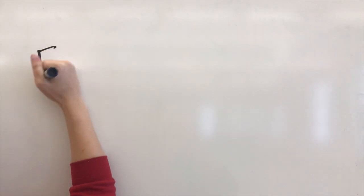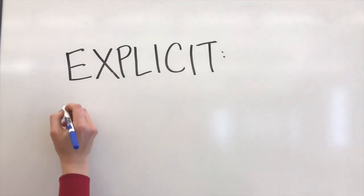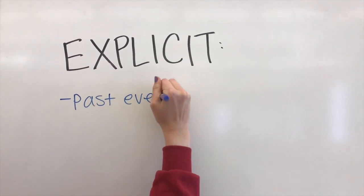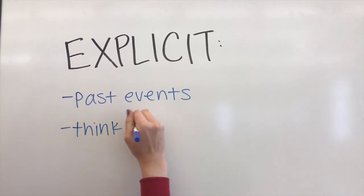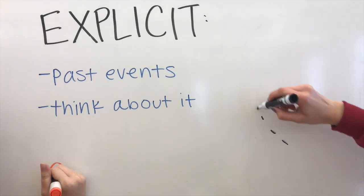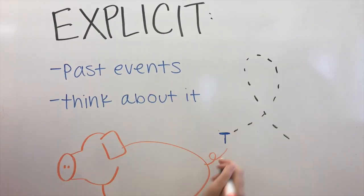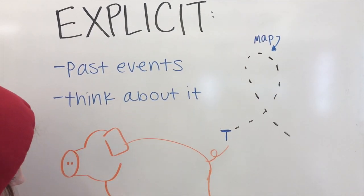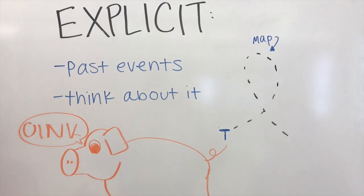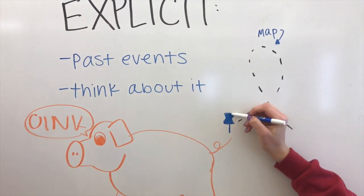On the other hand, explicit memory, or declarative memory, is our memory of events that have happened in the past. When we recall these memories, we have to consciously think about them. Explicit memory can be used when remembering a trip you went on, who you went to dinner with yesterday, or even naming all the animals that live on a farm.